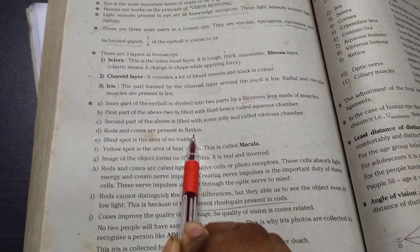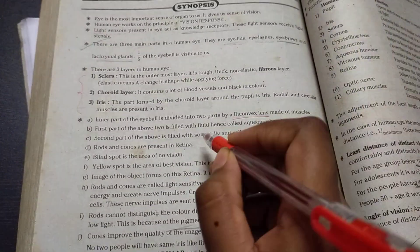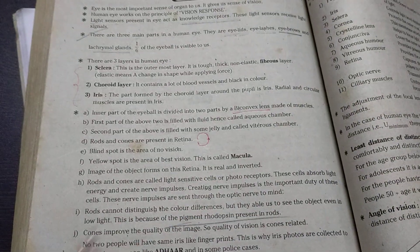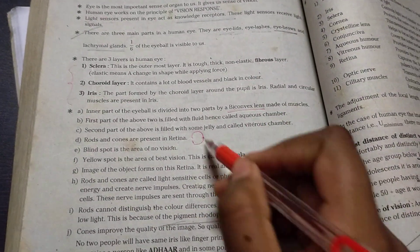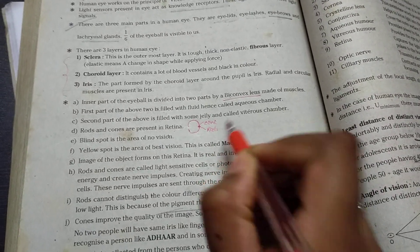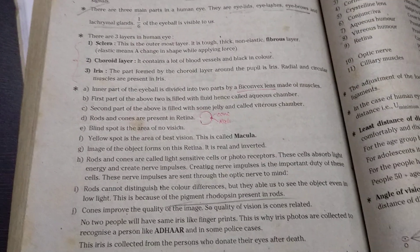So rods and cones are present in retina. So this is eye. So this is the point of retina. In retina they have two types. One is cones and one is rods. So rods and cones are very important.